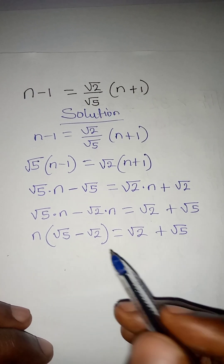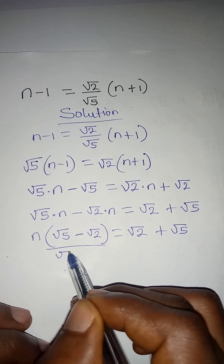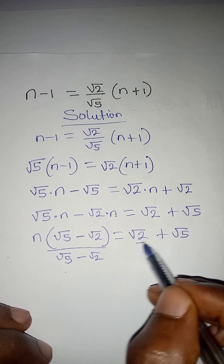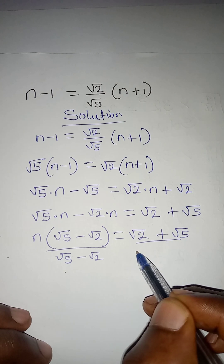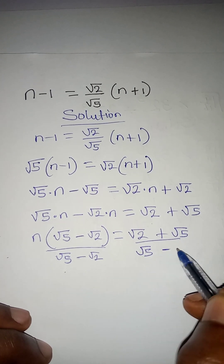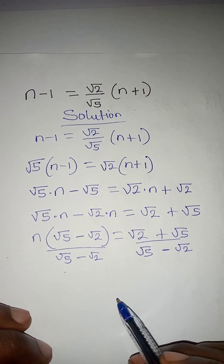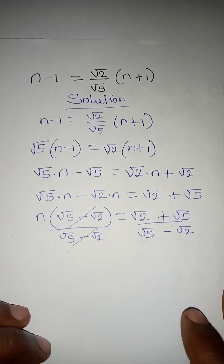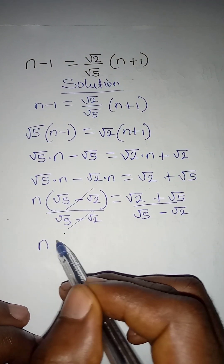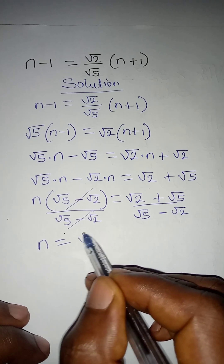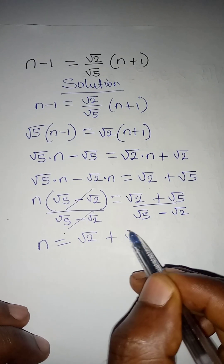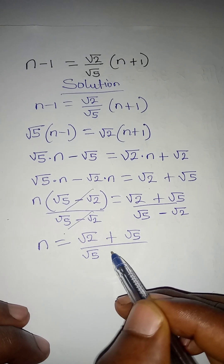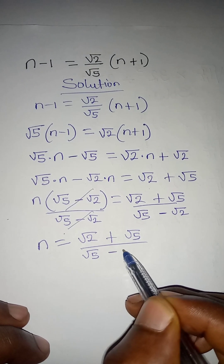Since I'm looking for the value of n, I have to divide both sides by root 5 minus root 2. That cancels on the left side, giving n equal to root 2 plus root 5, all over root 5 minus root 2.